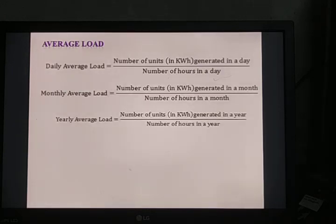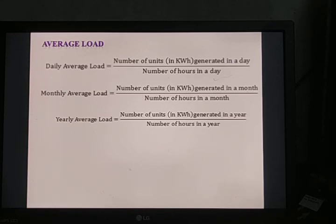Yearly or annual average load equals the number of units generated in a year divided by the number of hours in a year. The number of hours in a year is 8760 hours — that is 365 days multiplied by 24 hours.